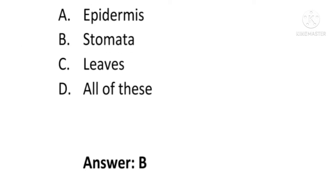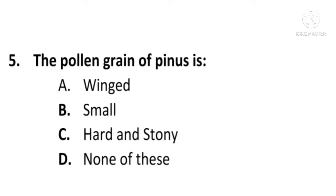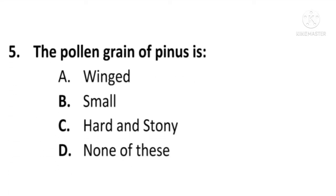Next question: The pollen grain of pine is — A) Winged, B) Small, C) Hard and stony, or D) None of these. The correct option is A, Winged. The pollen grain of pine is winged; A is the correct option.